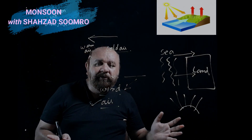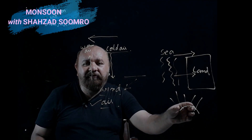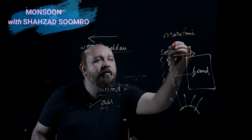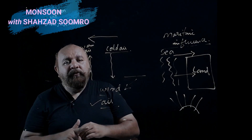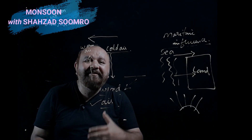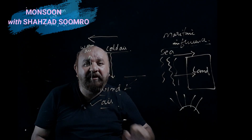This is the phenomenon of uneven heating and cooling — wind moves from sea to land. If we consider only the coastal area, we call this maritime influence. Now, having learned these concepts, we will come to our main topic: how does monsoon occur? Keep in mind all the concepts we have covered so far.